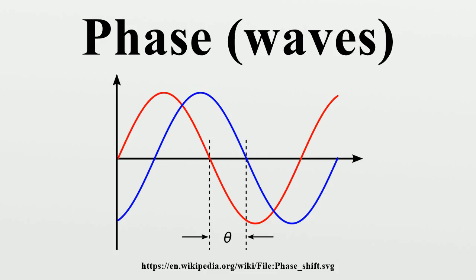If two interacting waves meet at a point where they are in antiphase, then destructive interference will occur. It is common for waves of electromagnetic, acoustic, or other energy to become superposed in the transmission medium. When that happens, the phase difference determines whether they reinforce or weaken each other. Complete cancellation is possible for waves with equal amplitudes.